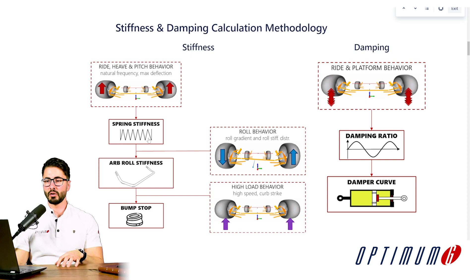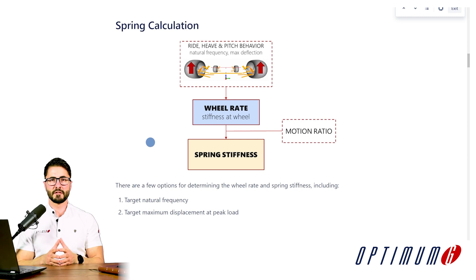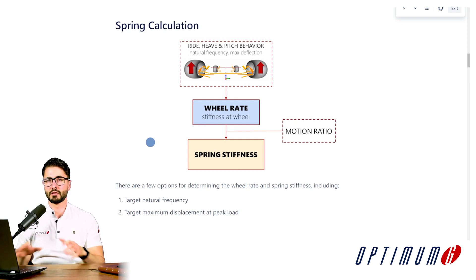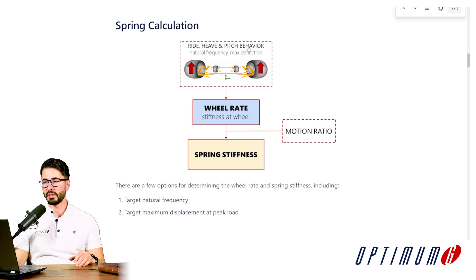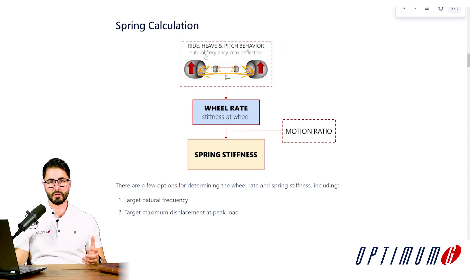The first step, as you can see, is that we always start by defining the spring stiffness that we would like to use. If we expand a little bit further in this calculation block for the spring stiffness, we need to determine the ride, heave, and pitch behavior that we would like to see — for example, by defining a natural frequency that is appropriate for this car. With this information, we are able to calculate first the wheel rate.